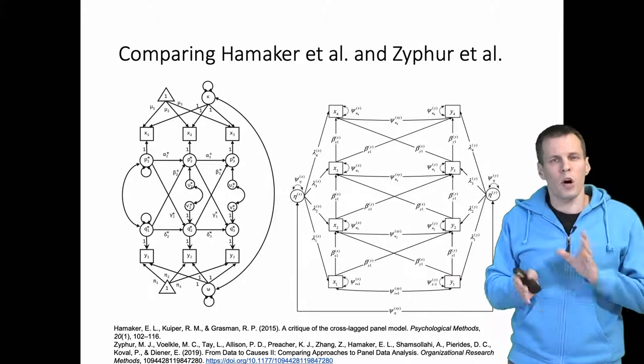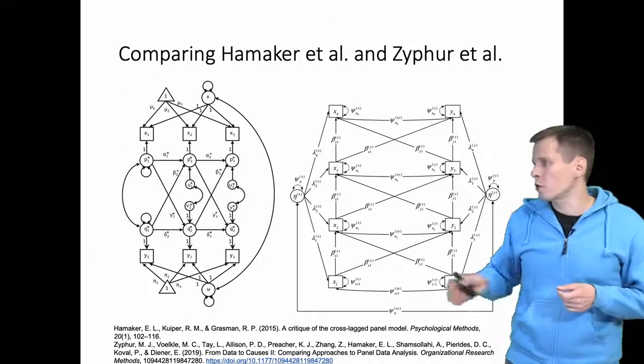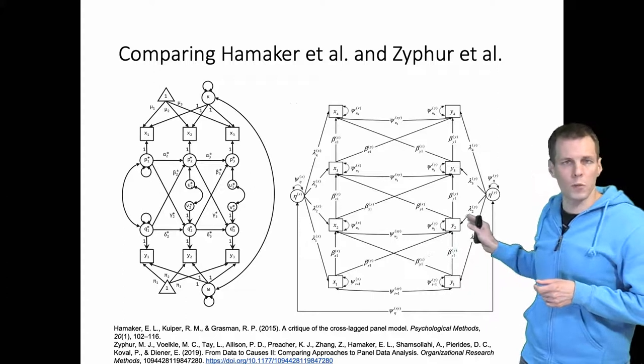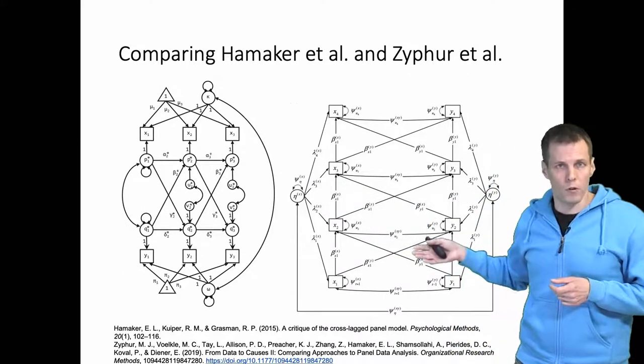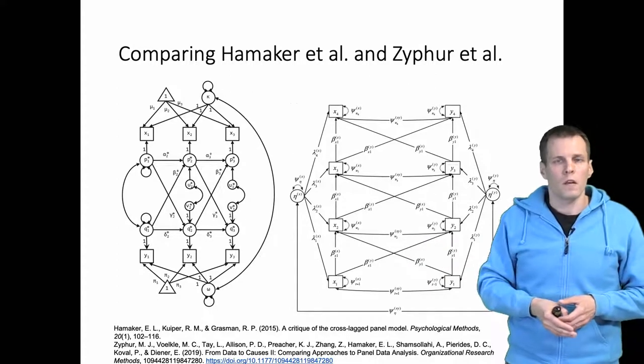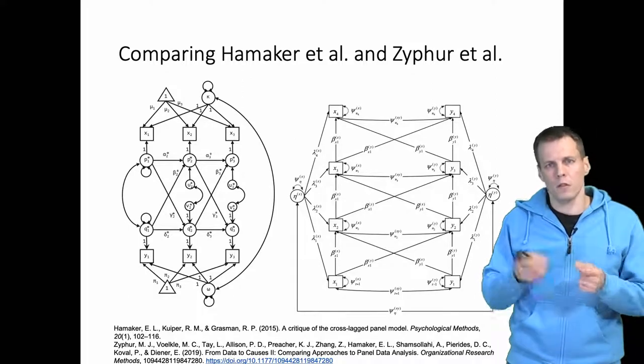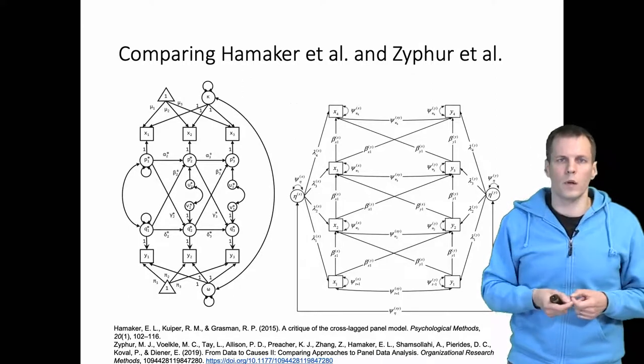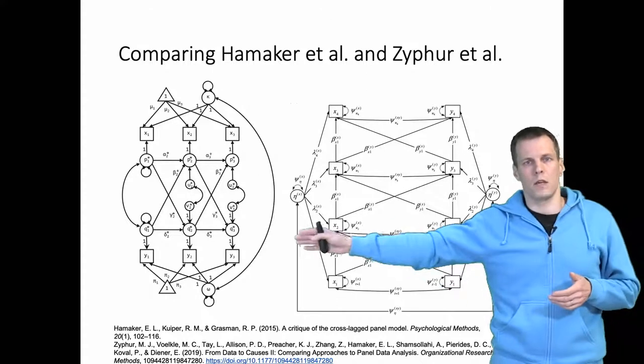Which model should we apply? If we are only interested in the within effect, we should go with Zyphur's approach without these added latent variables because it is simpler to specify—less specification, less room for error. If we are interested in understanding the between effect or the contextual effect, then depending on which effect we are interested in, we choose the modeling approach based on that. Typically, the contextual effect would be more interesting because it has more easier causal interpretation than the between effect.